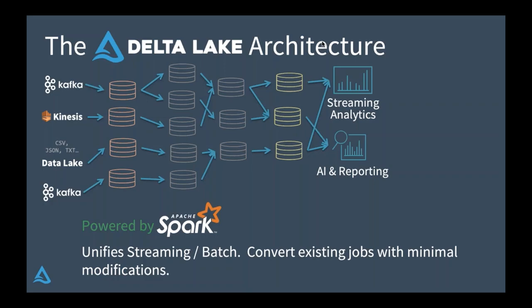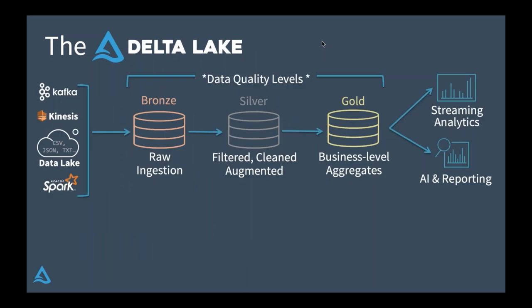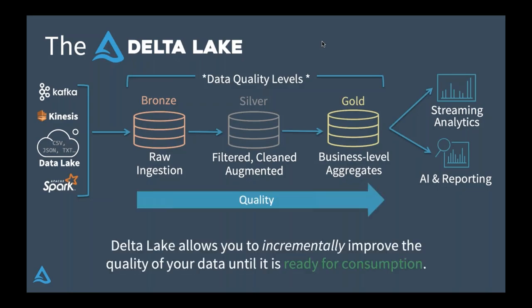I want to talk about some of the hallmarks of the Delta Lake architecture. First, I want to zone in on this idea of data quality levels. These are not fundamental things of Delta Lake, but I've seen people be very successful with this pattern alongside Delta's features. The idea is that as you bring data into the data lake, rather than trying to make it perfect all at once, you incrementally improve the quality until it's ready for consumption. Starting at the beginning is your bronze level data — this is a dumping ground for raw data. By capturing everything without a lot of munging or parsing, there's no way to have bugs in your parsing code. You're keeping everything from the beginning.